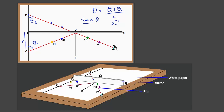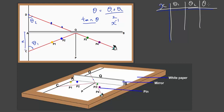Now let's look at how the table of readings will look. The table will have columns for x, theta 1, theta 2, theta, tan theta, and finally the reciprocal of x. For every value of x — say x equals 4 cm — you get the reciprocal which is 0.25. You measure theta 1, measure theta 2, find the average theta, then take tan theta. You do that for various values of x.